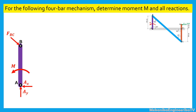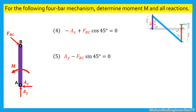Considering the bar AB, it is also possible to write three equilibrium equations. The equilibrium of forces along the horizontal direction gives: minus AX plus FBC times cosine 45 degrees is equal to zero. The equilibrium of forces along the vertical direction gives: AY minus FBC times sine 45 degrees is equal to zero. The moment equilibrium equation around the point A gives: the moment M minus FBC times cosine 45 degrees times 30 is equal to zero. The distances are considered in centimeters, thus the moment will be calculated in Newton-centimeters.